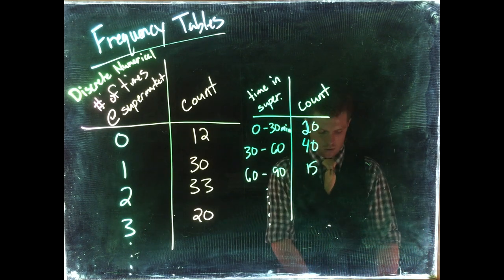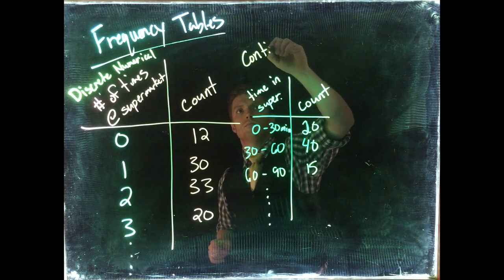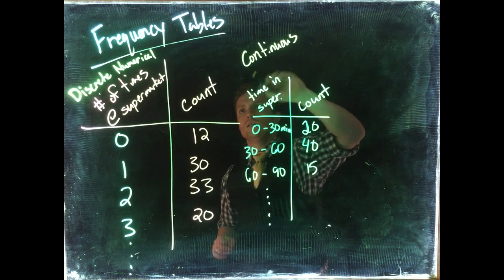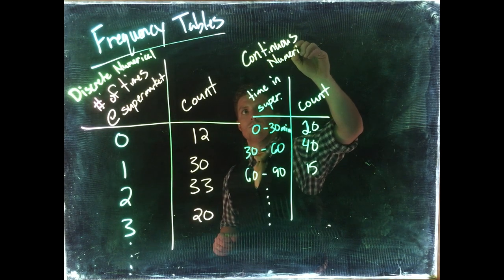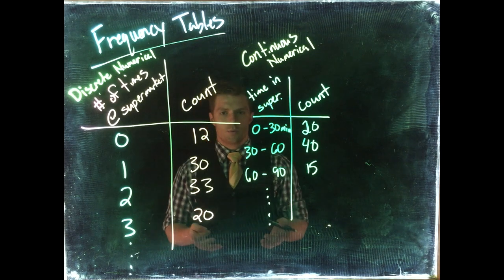Now this is, like I said before, this is continuous, continuous numerical. And the big difference here is how do you set up your groups.